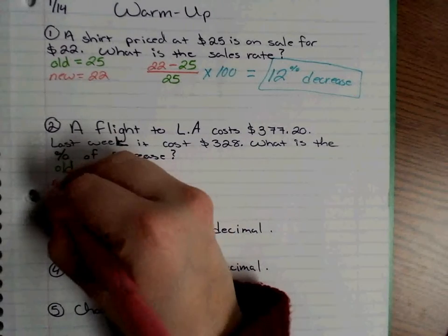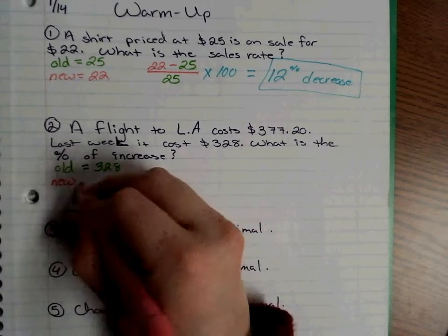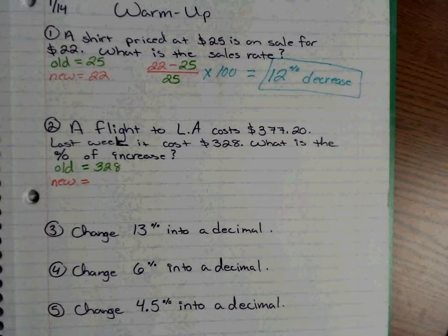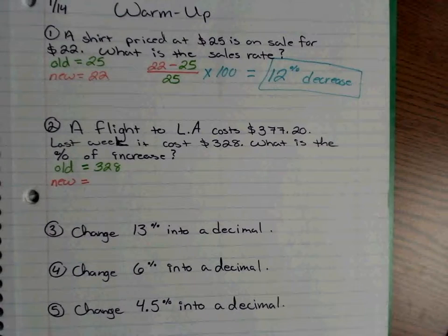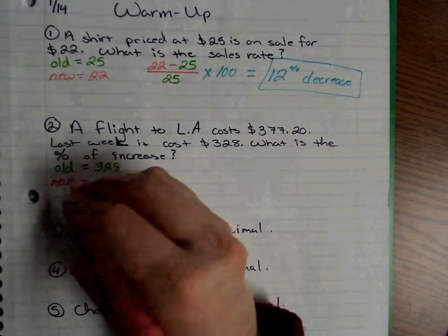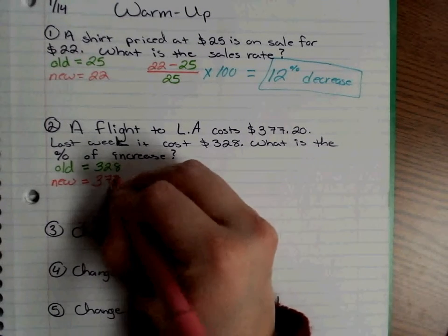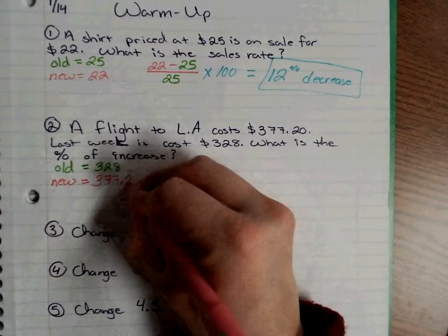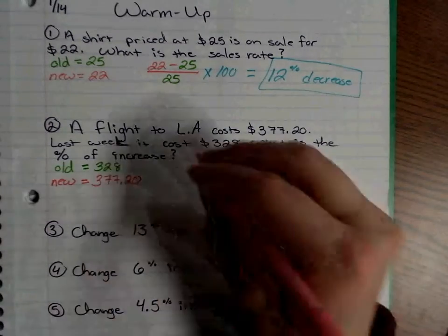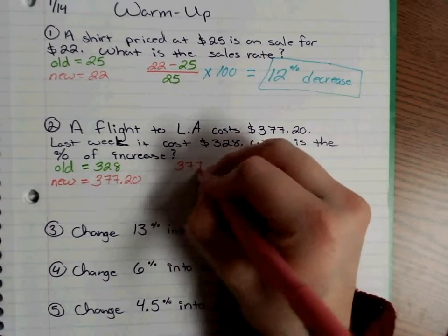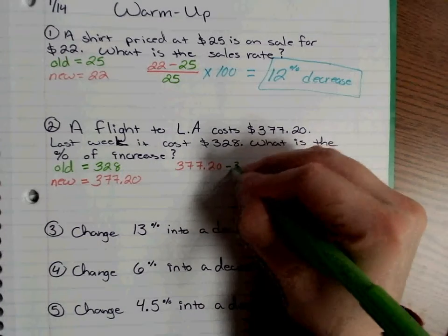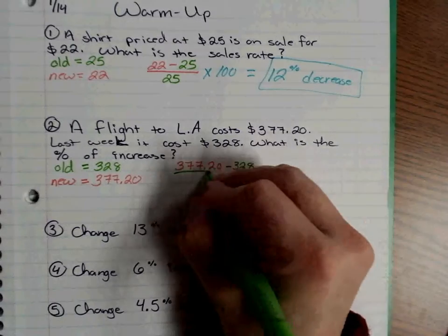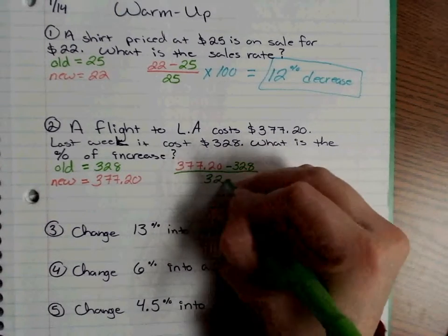You have to be careful because a lot of you missed one question on that quiz because you assumed the first value is always the original, but it's not. You have to read the question carefully. The first value in this case happened to be the newest price. So you're taking your new $377.20 and subtracting the old $328.